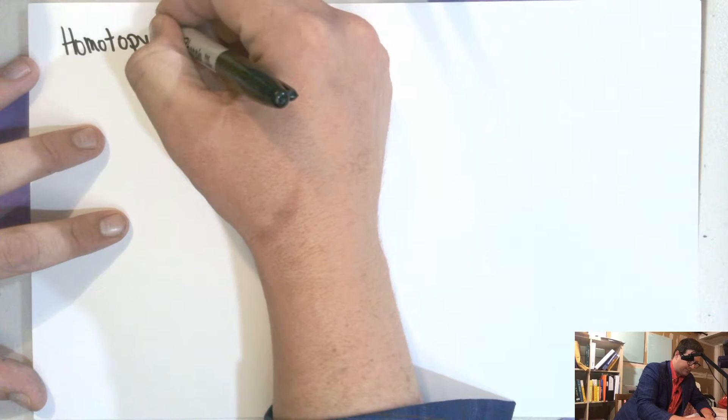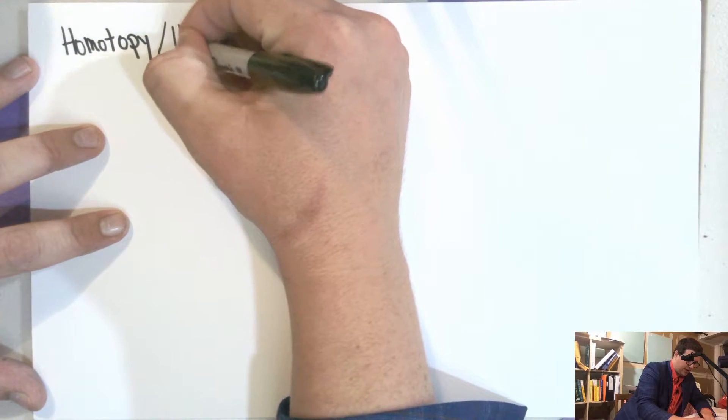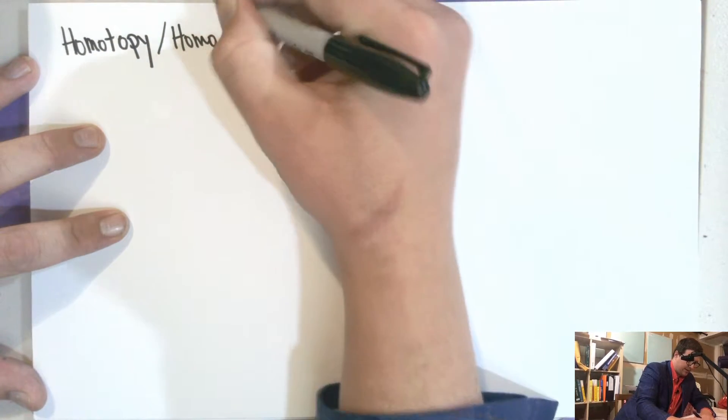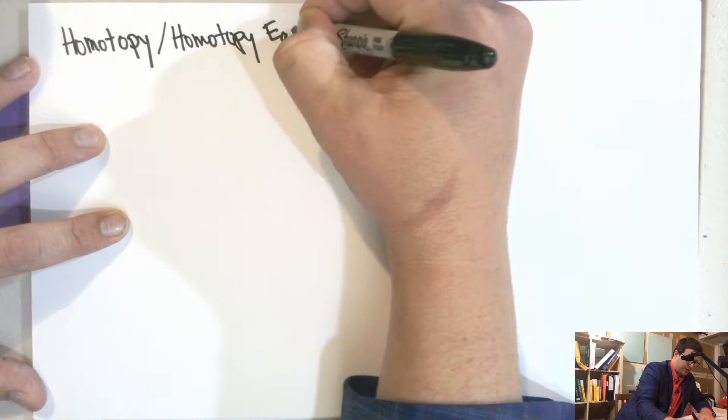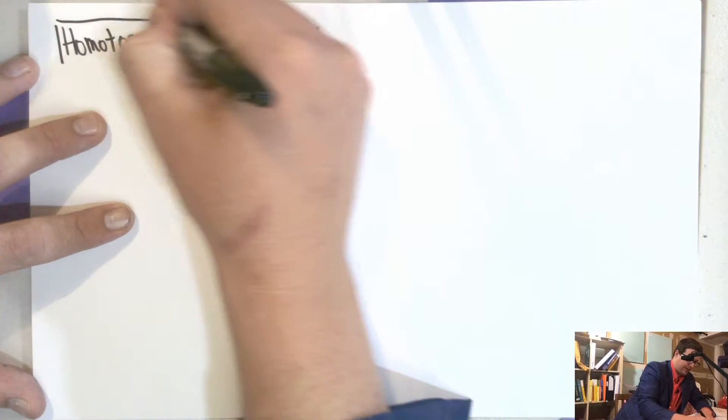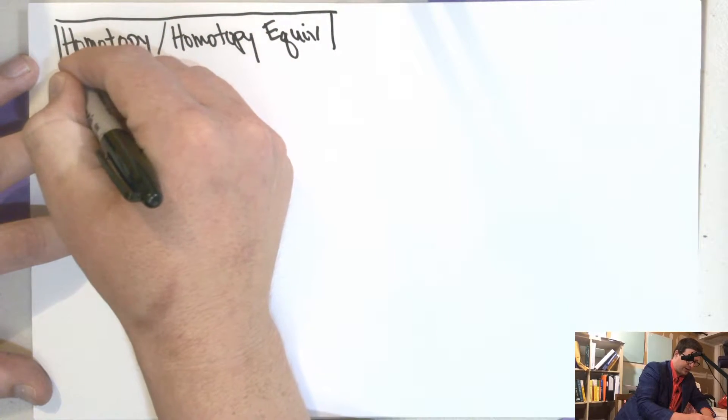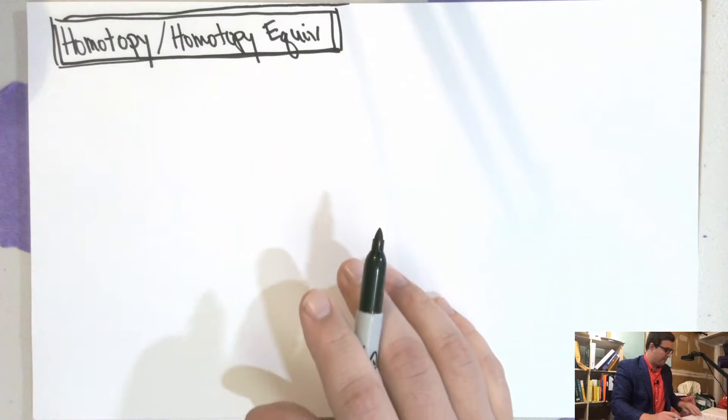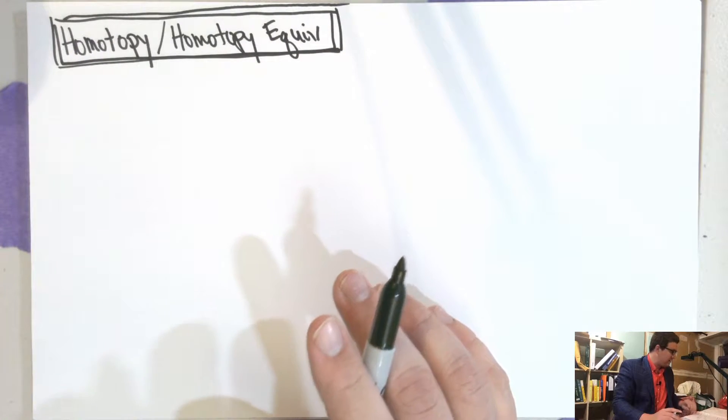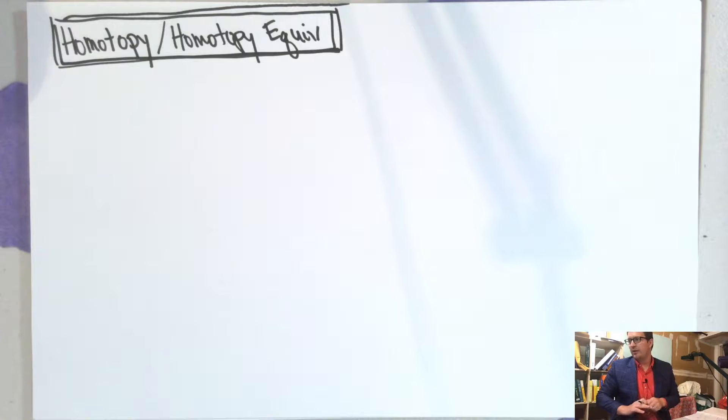This is the cliché part of topology where people talk about a coffee mug and a donut being equivalent. They're homotopy equivalent. And so before getting into this, I think I should do some examples. Here are my examples.